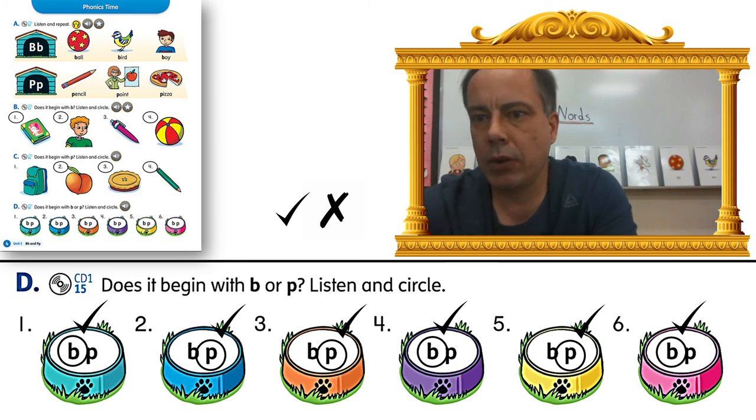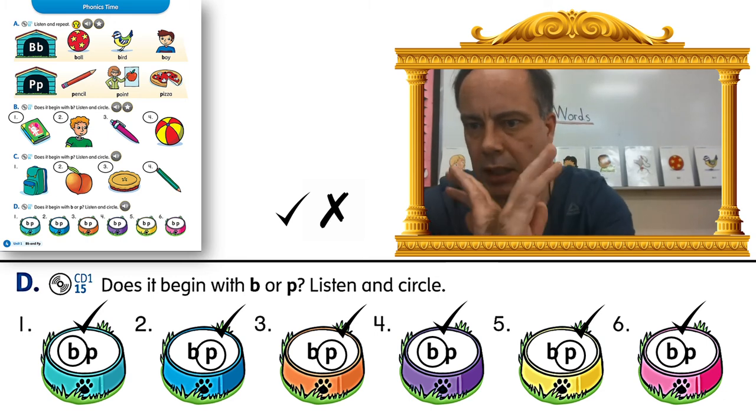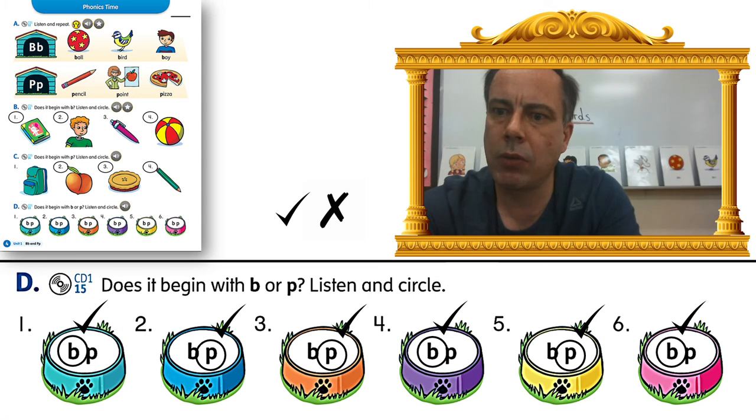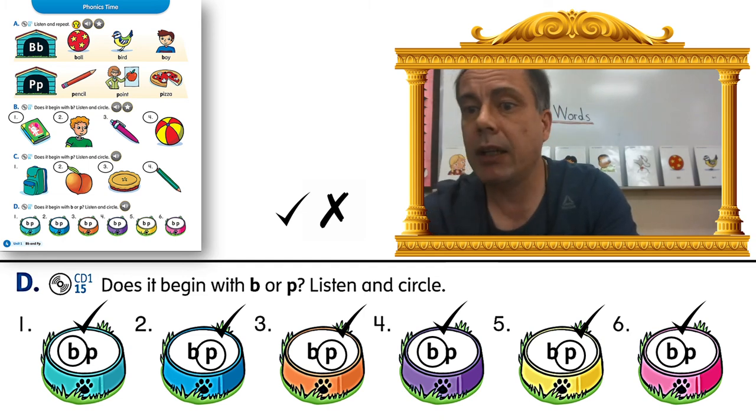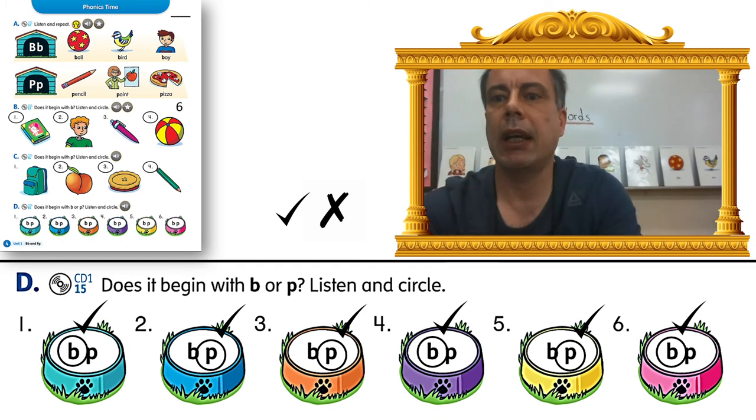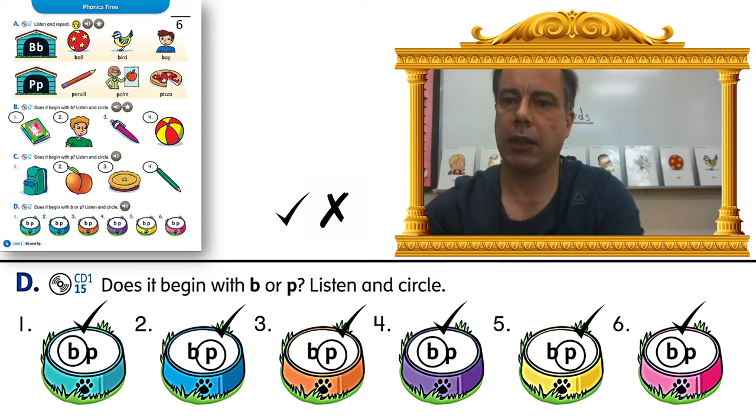After you write check or X, I want you to write the score on the top of the page. So you write, you draw a line and you write six under the line. Then you write your score above the line. So if you got six of six, it's going to look like this.